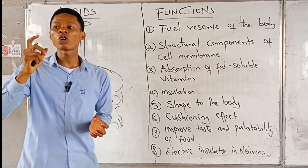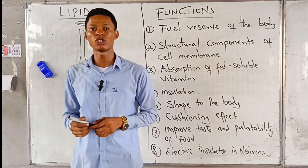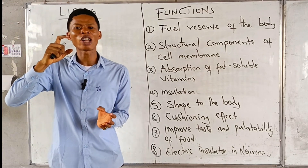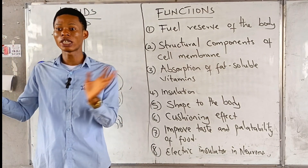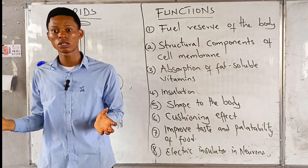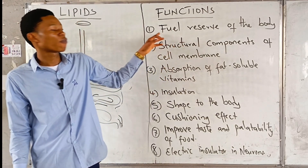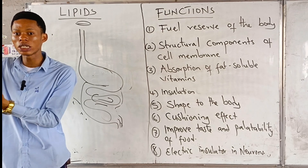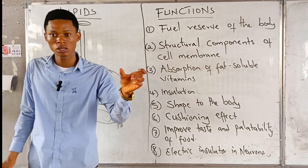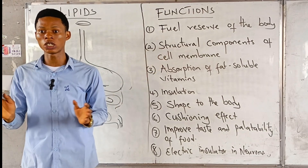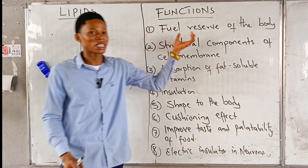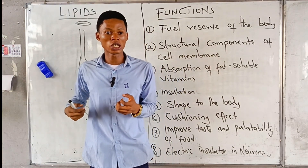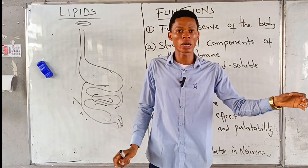But if you don't have carbohydrates in your body, will you die immediately? You will not die. Your body will look for another means to get energy. Since carbohydrates are not available, the body will go to fats — lipids — and break down fats into smaller units to release energy. We'll look at the steps in breaking down fats to release energy, but for now, just know that fats serve as a fuel reserve. They are stored so that in case carbohydrates are not there to give us energy, the body will source energy from fats.